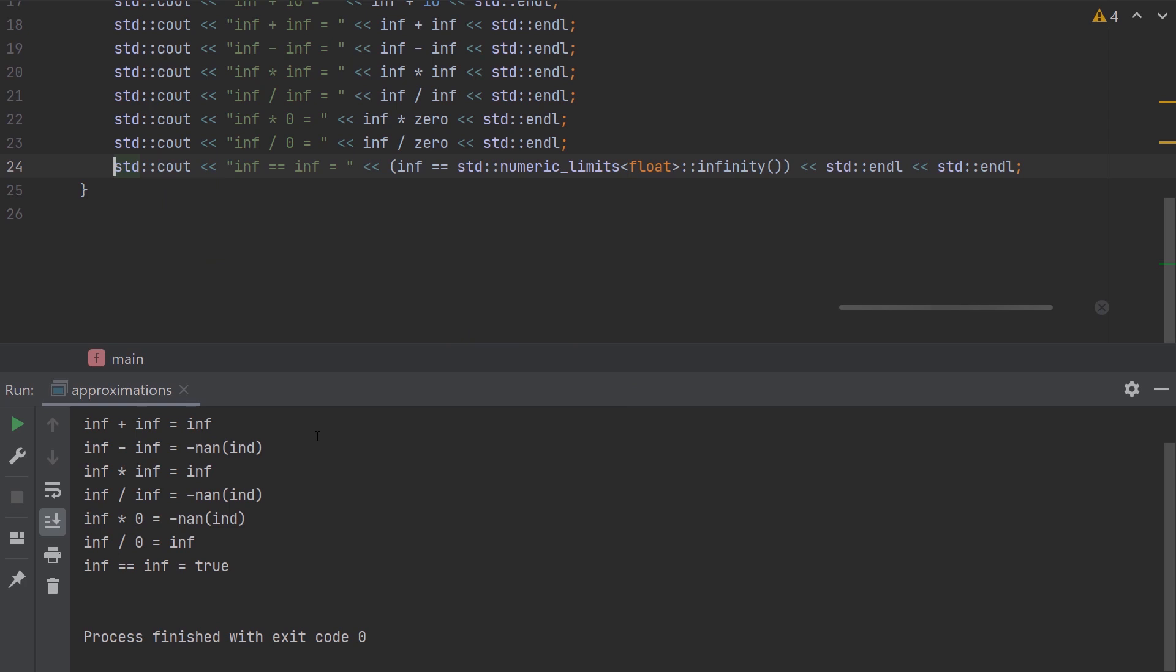Infinity plus any number is infinity. Infinity minus infinity is not a number. Infinity times infinity is infinity. Infinity divided by infinity is not a number. Infinity times zero is not a number. Infinity divided by zero is infinity for some reason. Comparison of infinity equal to infinity is true. Surprising again.